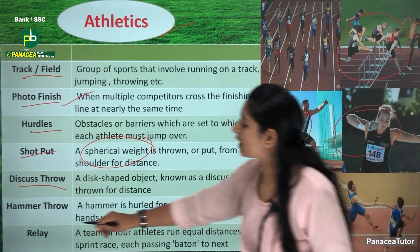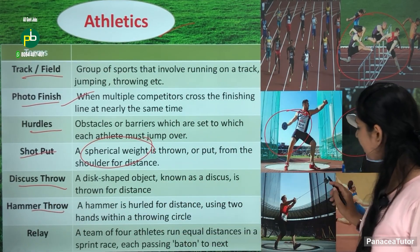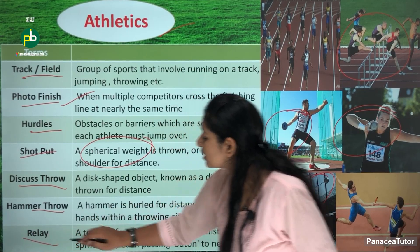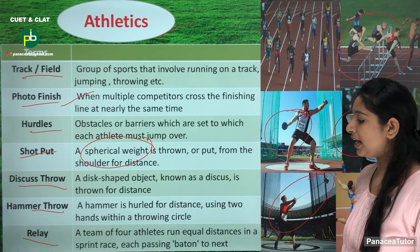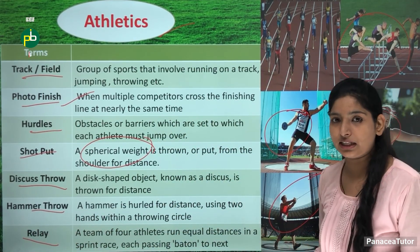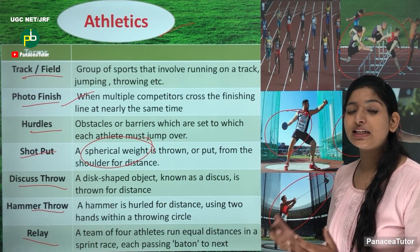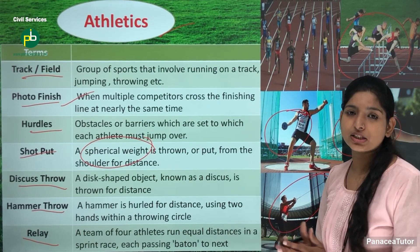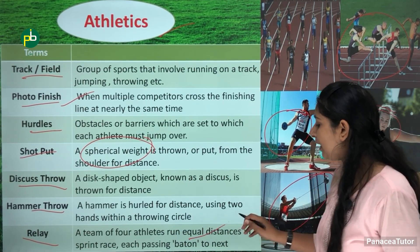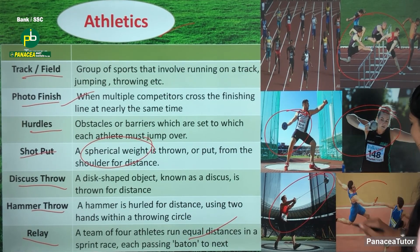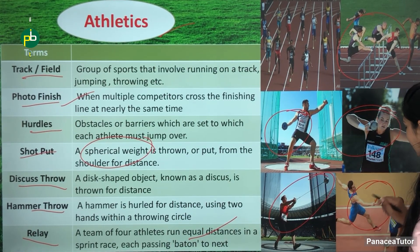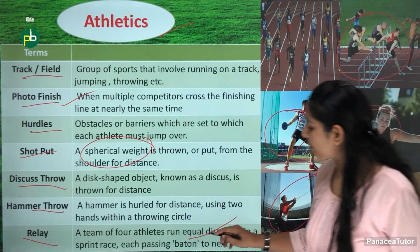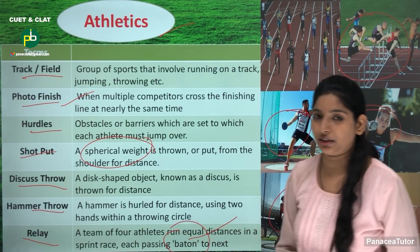Next is hammer throw. Then the relay race — where four athletes cover a predetermined distance together. They pass a baton to one another; baton is this rod-like object which we particularly call baton in the relay race.